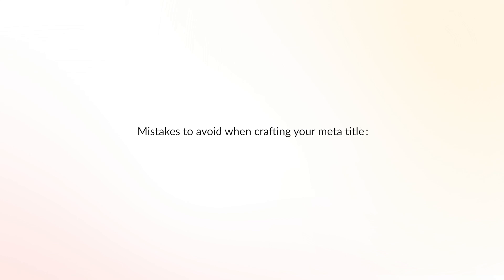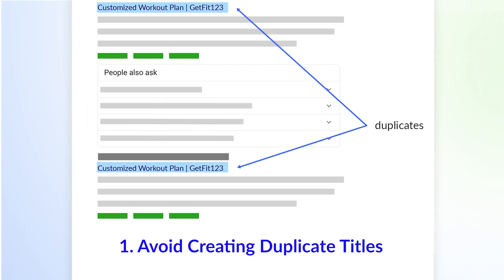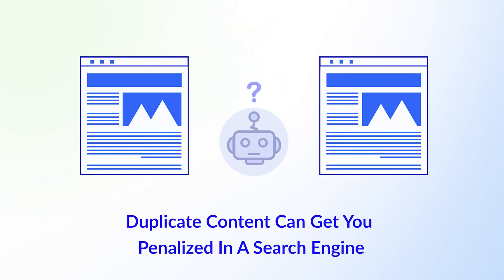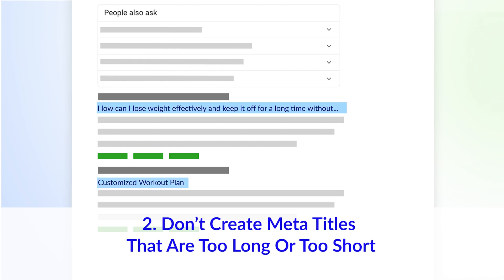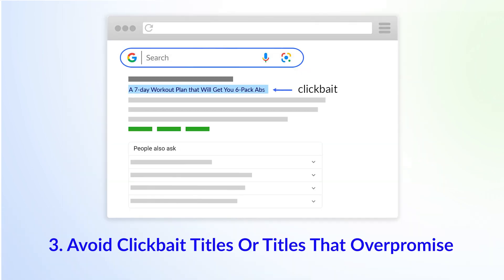And here are some mistakes to avoid when crafting your meta titles. 1. Avoid creating duplicate titles — this is easy to do on platforms such as WordPress where you may be cloning an existing page or post to save time. 2. Don't create meta titles that are too long, as they'll truncate in the SERPs. But also avoid titles that are too short, as that's a waste of prime real estate and a wasted opportunity to entice searchers to click. 3. Avoid clickbait titles, as these can result in no clicks — or if your clickbait works, lots of clicks that result in a high bounce rate when searchers realise the over-promise. Both scenarios can cause your rankings to drop.